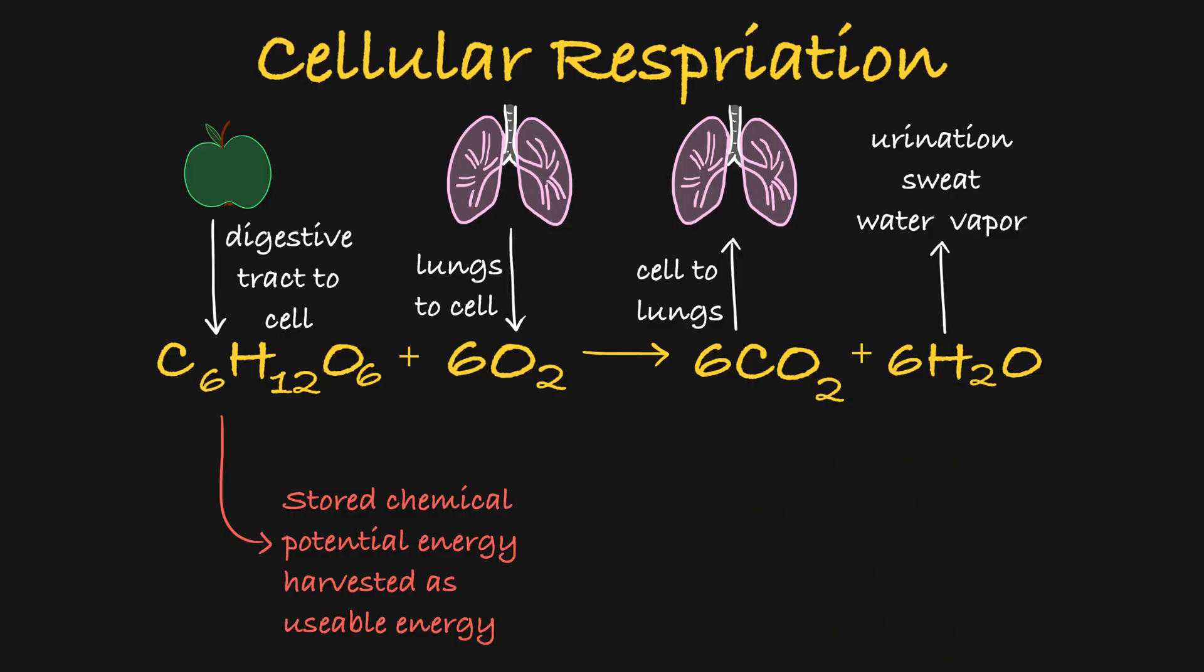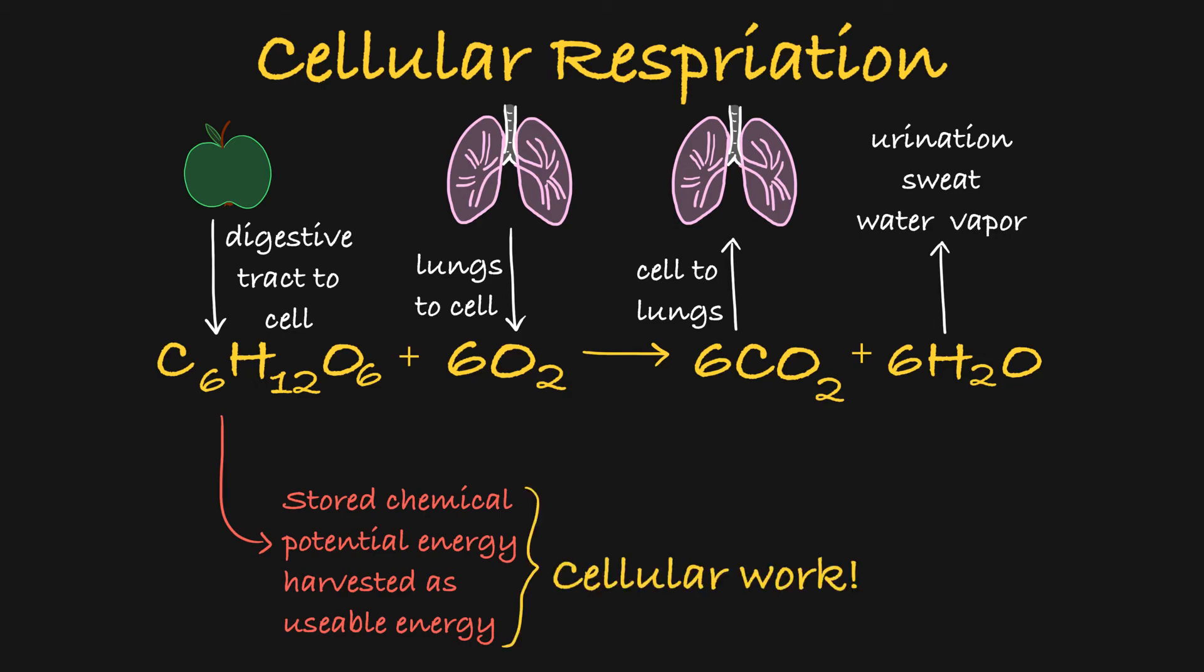The cell will then use that energy it harvested from glucose to do work. One thing to keep in mind is that we have transformed this chemical potential energy stored in glucose into usable energy, some that will become kinetic energy used in cellular movement, and some that will be chemical potential energy stored in molecules within the cell. This transformation is not 100% efficient, so heat is produced as a byproduct of cellular respiration. This means that as your cells complete cellular respiration, they are warming your body up.